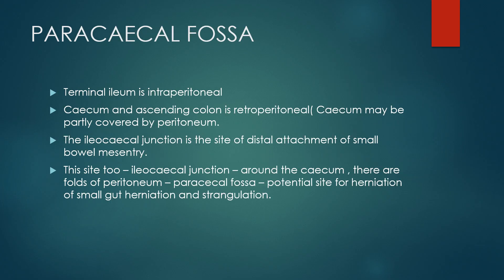Now we come to the paracecal fossa. Around the paracecal fossa there are certain spaces. This is because the terminal ileum is intraperitoneal, whereas the cecum and ascending colon is retroperitoneal — the ascending colon is always retroperitoneal.